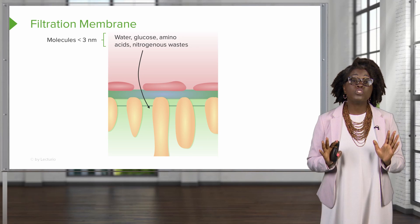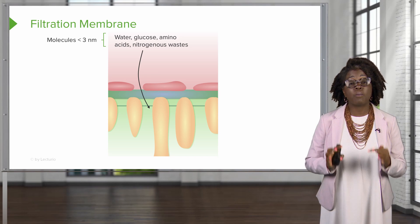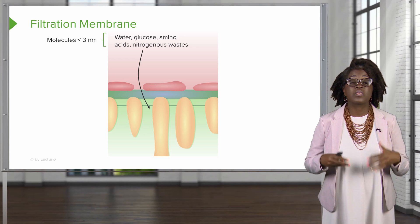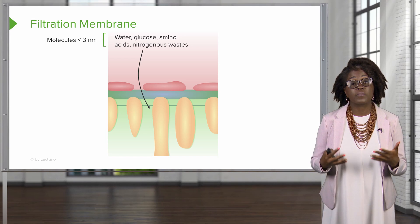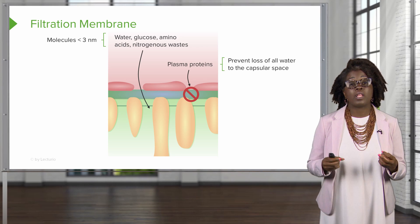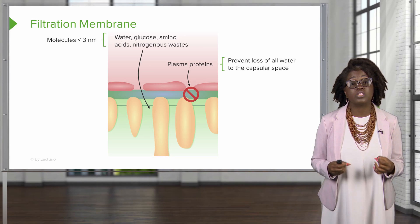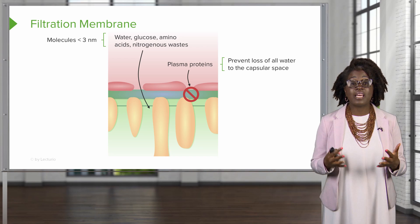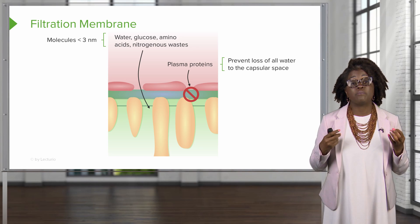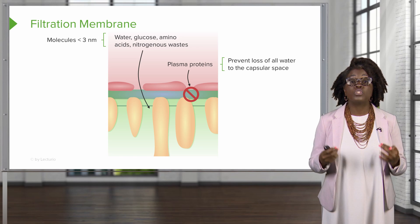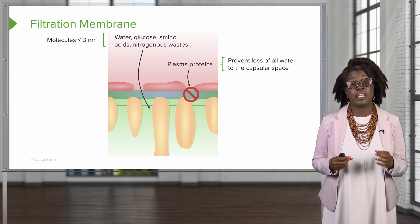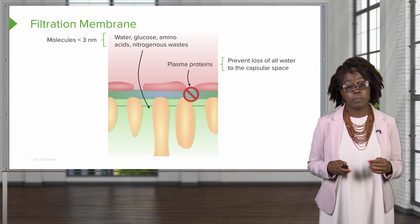The filtration membrane's main function is to allow smaller molecules — those smaller than about three nanometers — to pass. These include molecules like water, glucose, amino acids, and nitrogenous wastes. Larger molecules, such as plasma proteins, remain in the blood, and this is necessary to maintain colloid osmotic pressure. This prevents the loss of all water to the capsular space, and if there are proteins in the filtrate, it could indicate a problem with the filtration membrane.